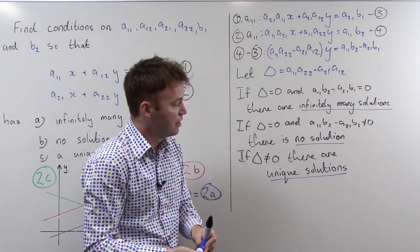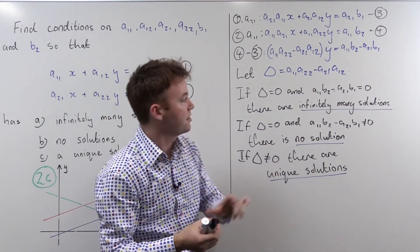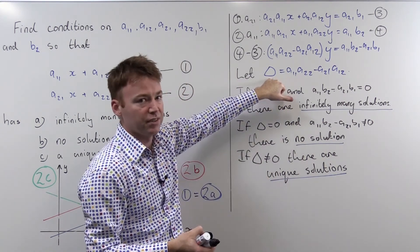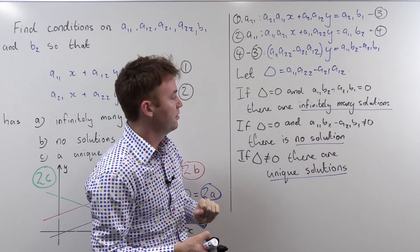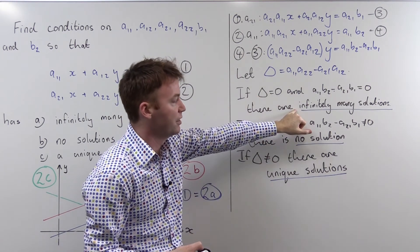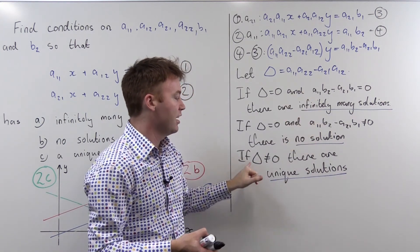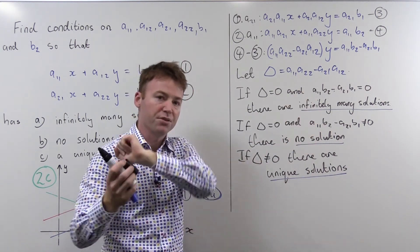So we've discovered something very interesting associated to a system of linear equations. There's this quantity called delta or the determinant, and if the determinant is zero then we're in one of these scenarios where there's infinitely many solutions or no solutions depending on what this quantity is over here. And if delta is not zero then there are unique solutions.